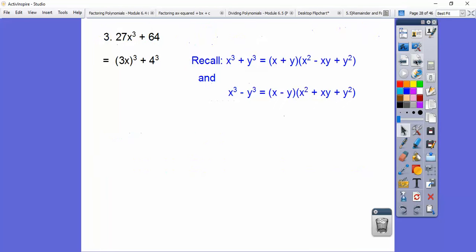So these are going to be bi times tri. So there's our space for bi's and tri's. Then we SOAP it. Same sign, opposite sign, always positive. So if that's a plus, that's a plus. This is opposite a plus, so it's minus. This one's always plus. The things that are being cubed goes in here. So 3x and then 4 goes in here.